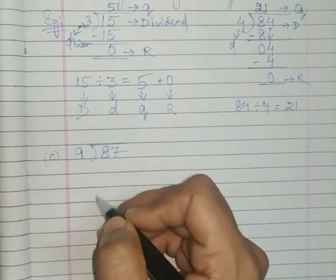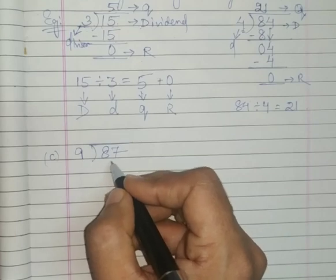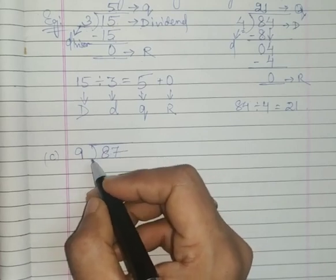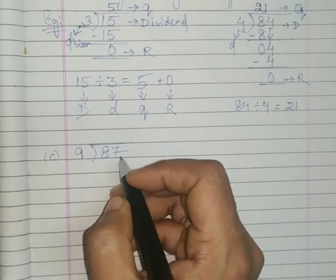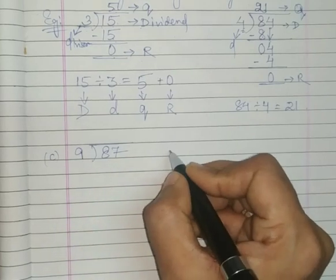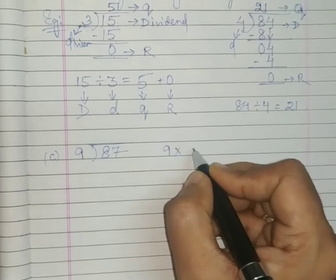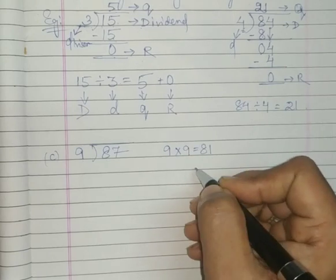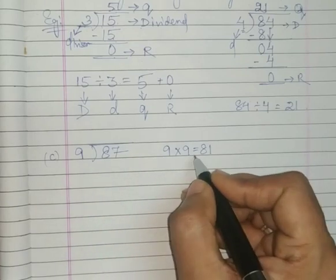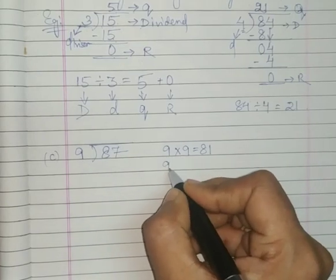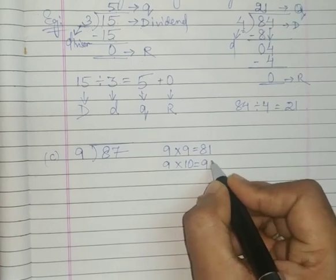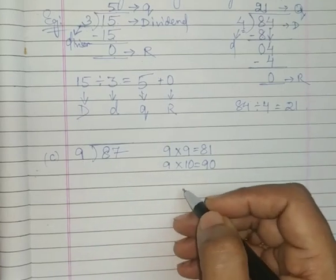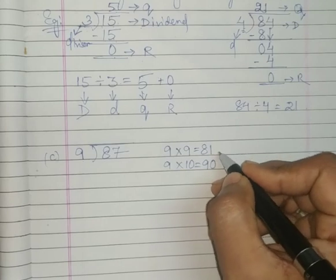Now 9—you look and search where you have 87 in the 9 table. If you remember, 9 nines are 81. It is less than 87. And 9 tens are 90. It is more than 87.